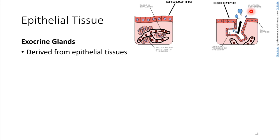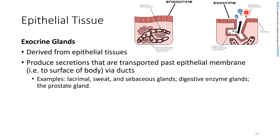Right now, since we're dealing with epithelial tissue, we're talking about exocrine glands. These cells lining the surface of the body secrete things that go out to the surface. Exocrine glands produce secretions that are carried by ducts — this right here would be an example of a duct.